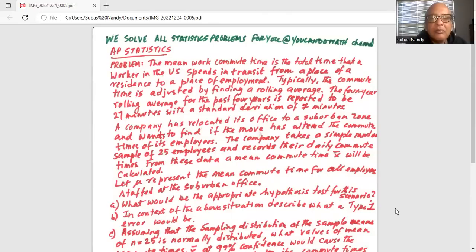The mean work commute time is the total time that a worker in the U.S. spends in transit from a place of residence to a place of employment. Typically the commute time is adjusted by finding a rolling average. The four-year rolling average for the past four years is reported to be 27 minutes with a standard deviation of seven minutes.